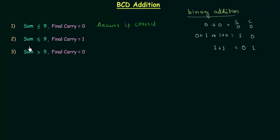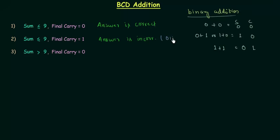In the second case, when sum is less than or equal to 9 but final carry is equal to 1, the answer obtained is incorrect and we have to correct our answer. To correct our answer we will just add 6, which is represented by 0110. So we have to add 6 to correct our answer.